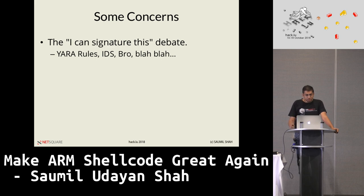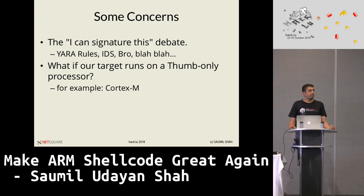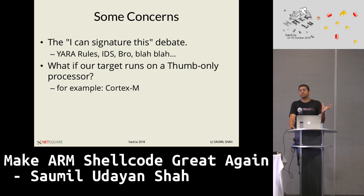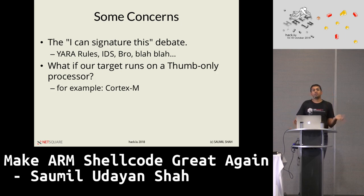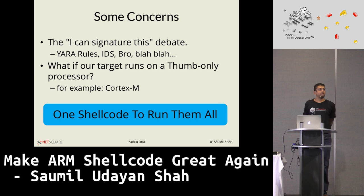Travis Goodspeed told me — he was actually playing with a Goodwatch at the time — that my trick would also work on some processors which are thumb-only. I didn't know there was something called just thumb-only processors. Some Cortex-M0 processors do not contain the ARM instruction set — they're only thumb mode. So if you do an overflow on a thumb-only processor and your instruction is in ARM mode, you're going to get a SIGILL and die. This led me to come up with the whole theory of one shellcode to run them all.